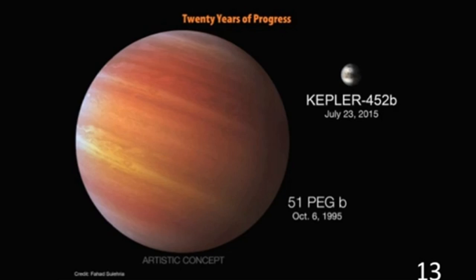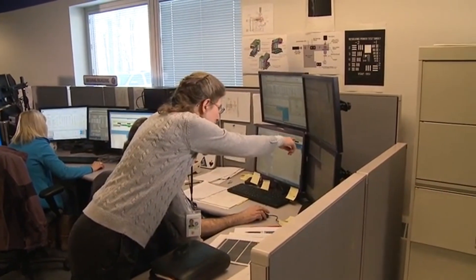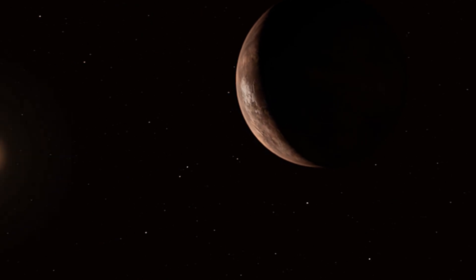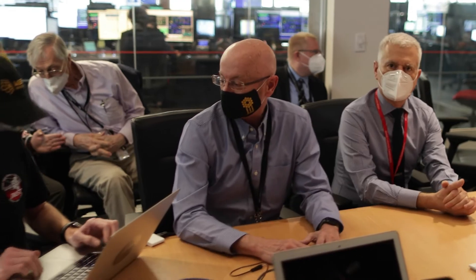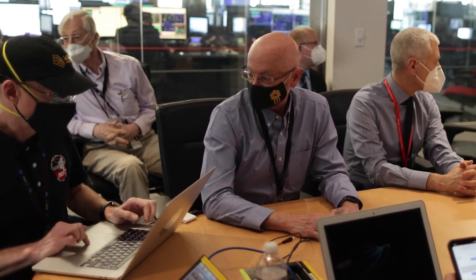Unlike anything in our own cosmic backyard, this planet is larger than Earth but smaller than Neptune, defying conventional planetary categories. This unique status presents a considerable challenge for scientists trying to unravel the mysteries of K2-18b.